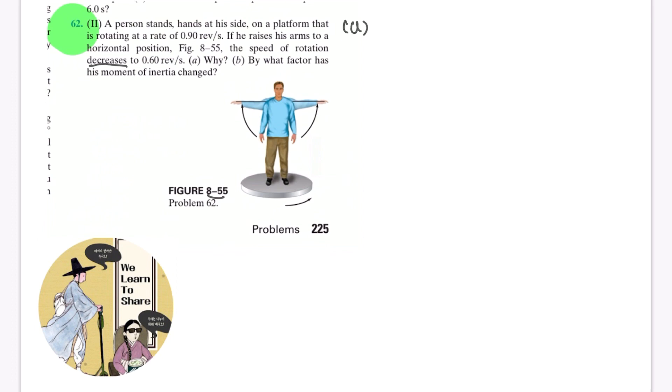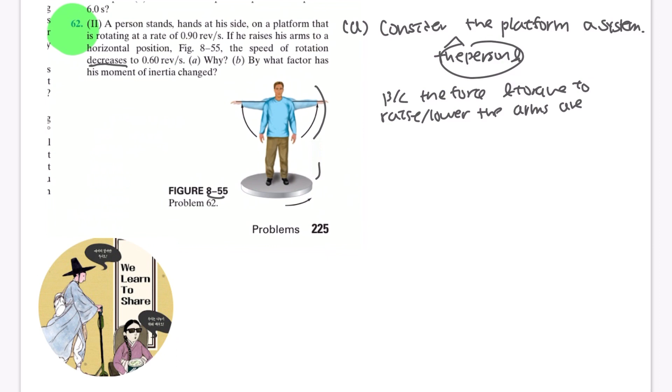This is kind of easy if you already know how the whole system works and what kind of formulas are involved. So let's consider the person and the platform as a system for angular momentum analysis. Since the force and torque to raise or lower the arms are internal to the system...